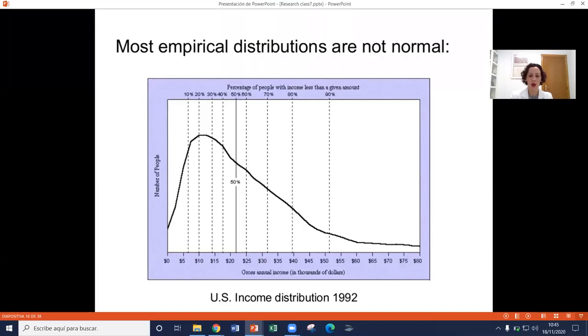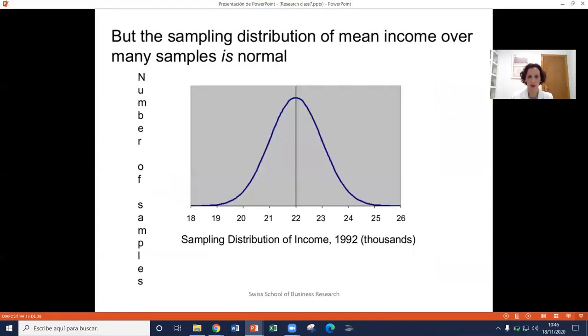So we can see that when we look at empirical distributions, they don't have this bell. They're not normal. They're not considered normal distribution means. For example, this one with US income distribution from 1992, it's definitely not a bell curve. But the sampling distribution of mean income, the distribution of the mean, is again a normal distribution bell curve.